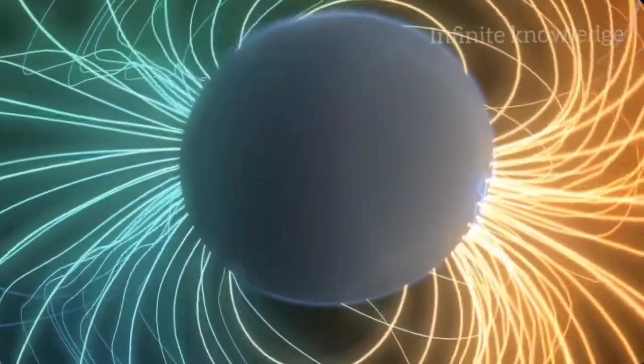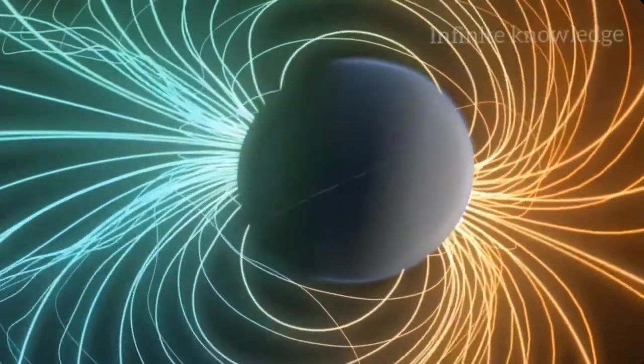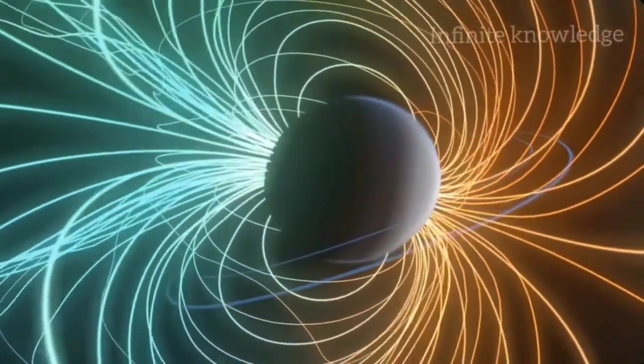Neptune's magnetic field is also strongly tilted, resulting in a lopsided magnetic shield, with its poles occasionally exposed to the solar blast.